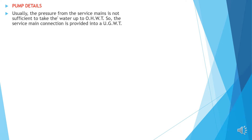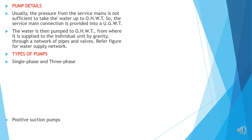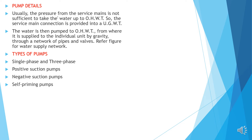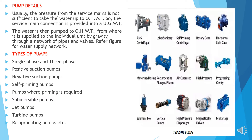Pump details. Usually the pressure from service mains is not sufficient to take the water up to the overhead tank, so the service main connection is provided into the UG water tank. The water is then pumped to the overhead water tank, from where it is supplied to individual units by gravity through a network of pipes and valves. Types of pumps: single phase and three phase, positive suction pumps, negative suction pumps, self-priming pumps, pumps where priming is required, submersible pumps, jet pumps, turbine pumps, reciprocating pumps, etc. Various images of the different types of pumps are provided.